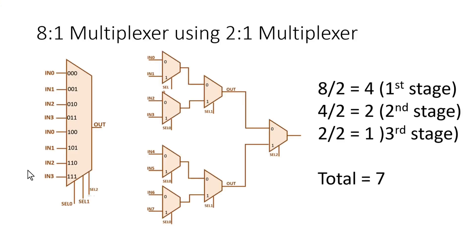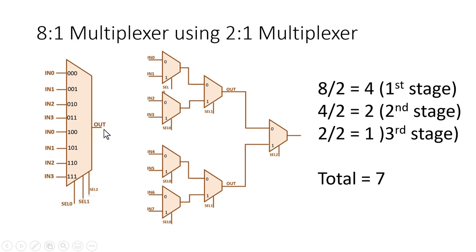To find the answer, let us first look at a simpler case — how many 2-to-1 multiplexers are required to implement an 8-to-1 multiplexer. This is the symbol of an 8-to-1 multiplexer. It has 8 input lines, 3 select lines, and 1 output.